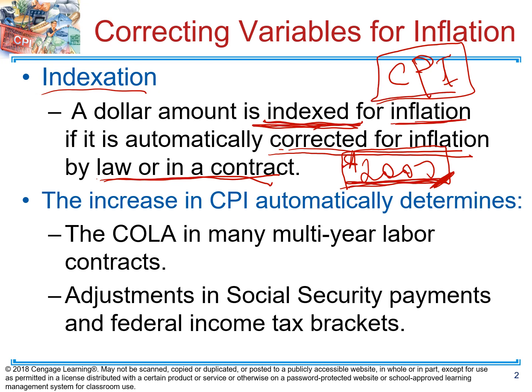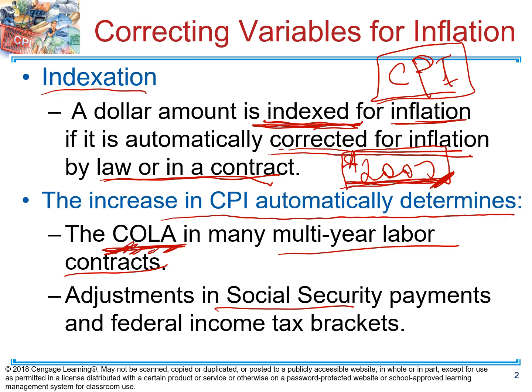A lot of multi-year labor contracts are automatically adjusted for inflation. These are called COLA — Cost of Living Allowances. This means that whatever contract you have, for example Social Security or a salary agreement, it has to be automatically corrected for inflation. So based on the COLA clause, contracts are indexed and must be corrected from year to year based on the inflation rate.